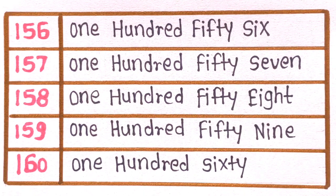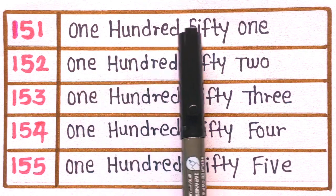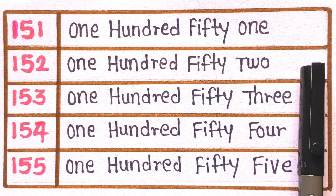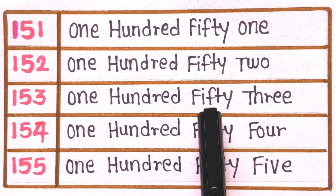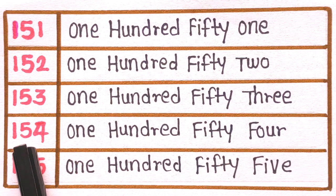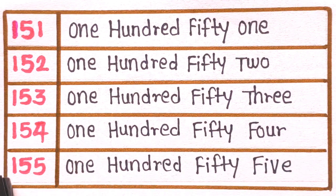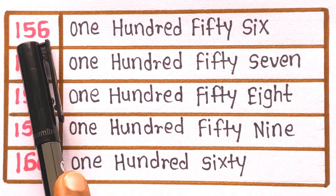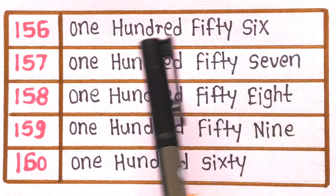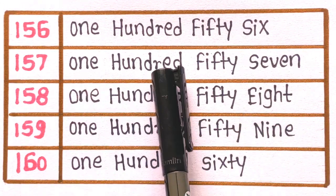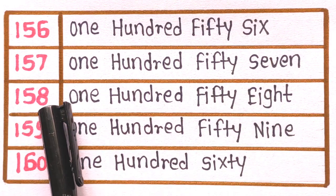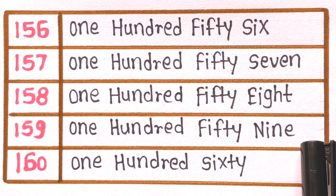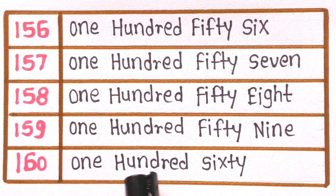Now let's revise with me. 151 is one hundred fifty one. 152 is one hundred fifty two. 153 is one hundred fifty three. 154 is one hundred fifty four. 155 is one hundred fifty five. 156 is one hundred fifty six. 157 is one hundred fifty seven. 158 is one hundred fifty eight. 159 is one hundred fifty nine. And 160 is one hundred sixty.